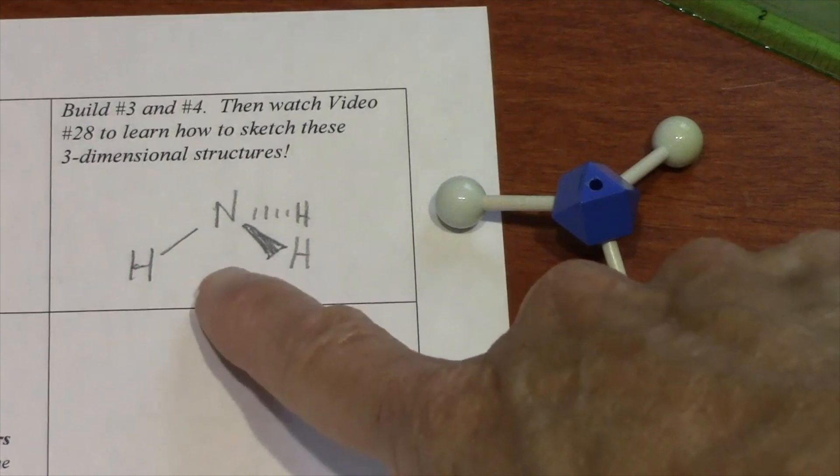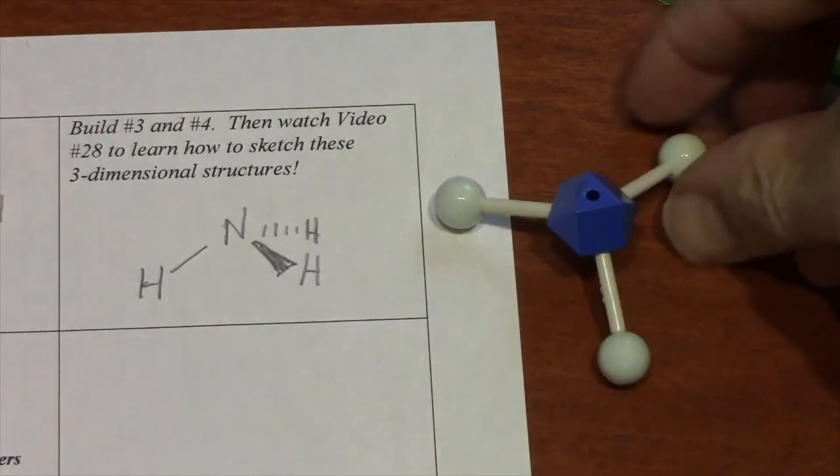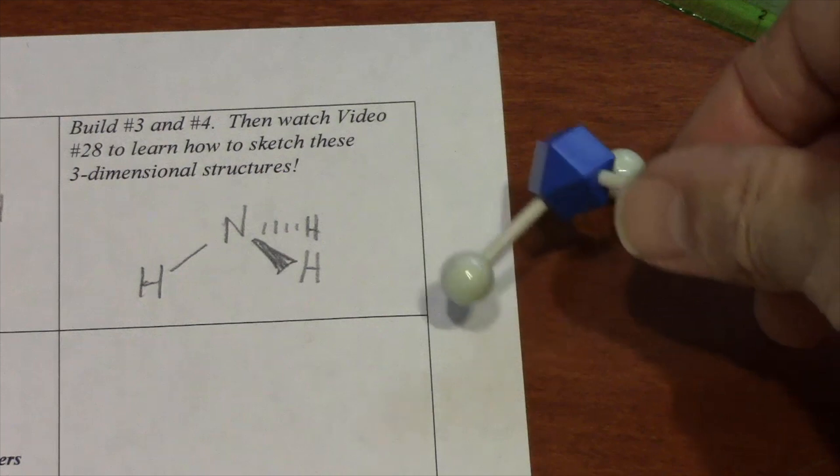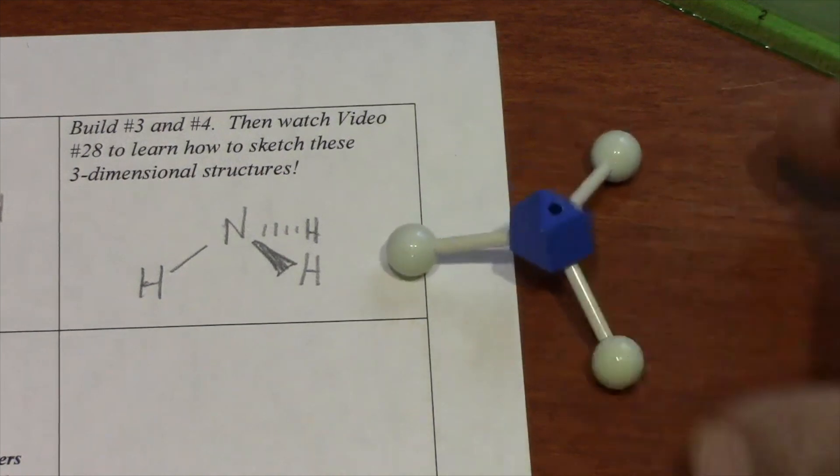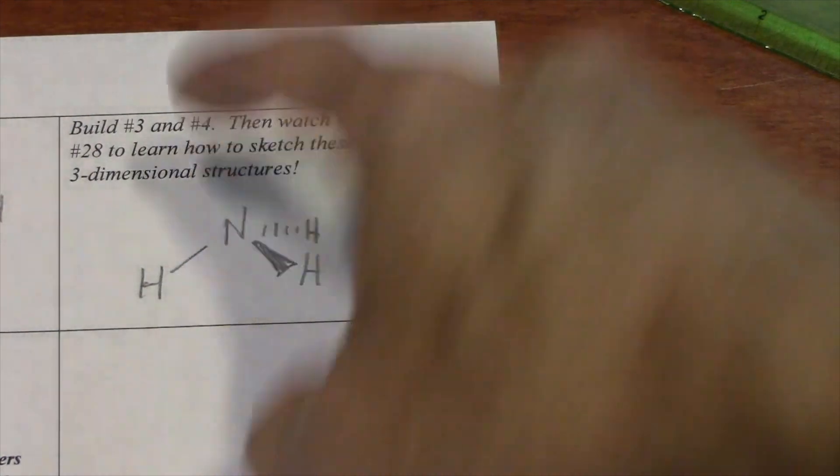To a chemist, this picture here represents a three dimensional structure that looks like this. It's a pyramid. Three feet on the bottom and the nitrogen on the top.